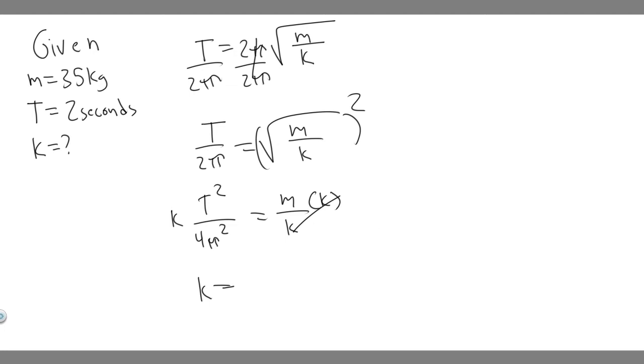So this right here is your formula. What we have to do is just plug in now. So k is going to be equal to the mass of the child, 35 kilograms, times 4π squared all over t, which is the period, which is 2 seconds.